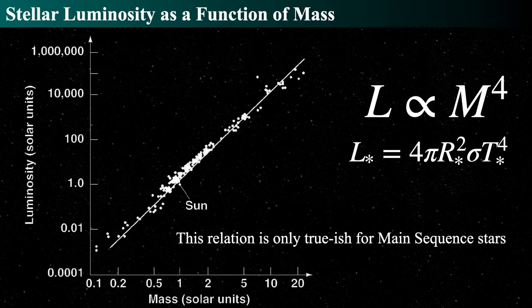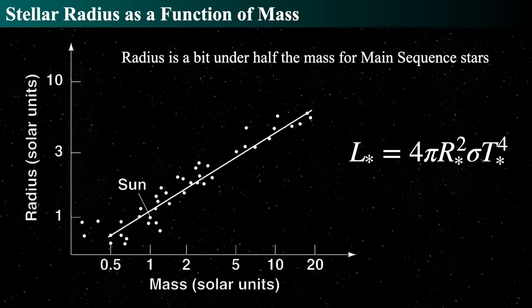Even though the radius and mass vary roughly the same amount, the luminosity and mass do not. Really massive stars are extraordinarily luminous compared to the sun, and really low-mass stars are extraordinarily under-luminous. The radius of a main sequence star varies almost the same as the mass.